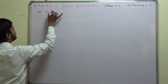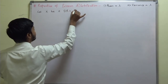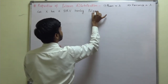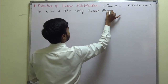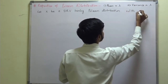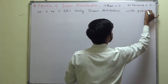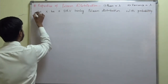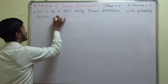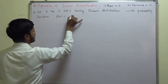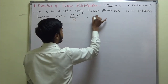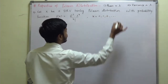Let x be a discrete random variable having Poisson distribution with probability function. What is the probability function in the Poisson distribution? f(x) is equal to e to the power minus lambda, into lambda to the power x, upon factorial x, where x varies from 0, 1, 2 and so on.